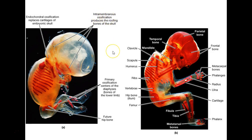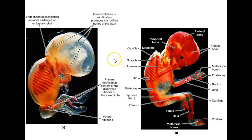Intramembranous ossification — within basically the dermis is where this is happening. Endo means inside and chondral means cartilage. So anytime you say chondro, think cartilage.